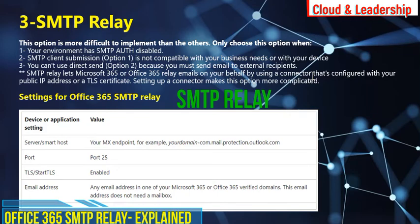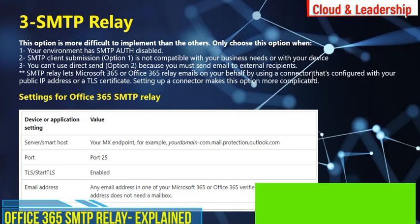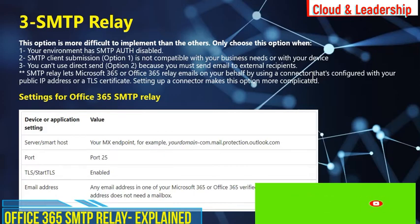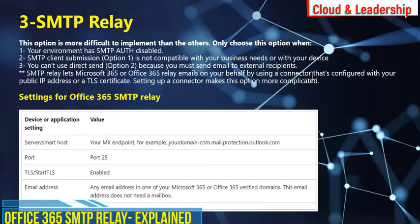The last option is SMTP relay. This option is more difficult — a bit more complicated to implement than the other two options. You will choose this option when your environment has SMTP authentication disabled, SMTP client submission is not compatible, and you cannot use direct send. SMTP relay lets Microsoft relay email on your behalf by using a connector that is configured with your public IP address or a TLS certificate.